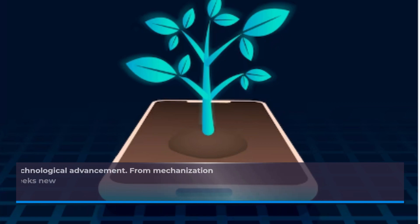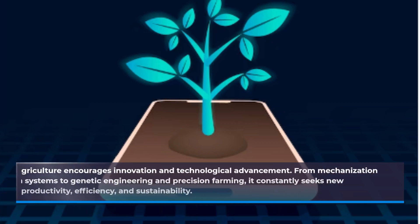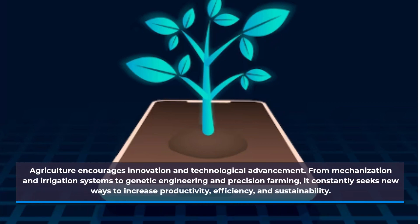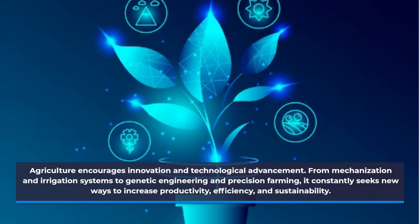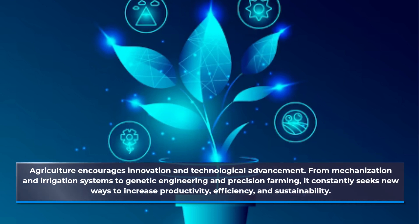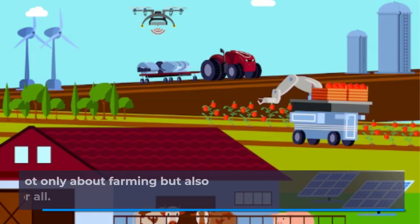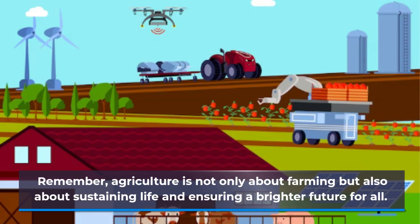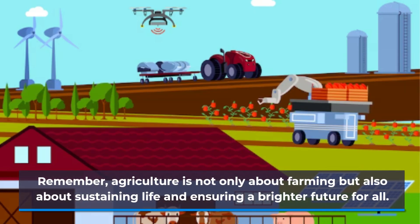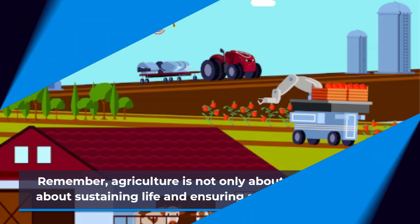from mechanization and irrigation systems to genetic engineering and precision farming. It constantly seeks new ways to increase productivity, efficiency, and sustainability. Remember, agriculture is not only about farming but also about sustaining life and ensuring a brighter future for all.